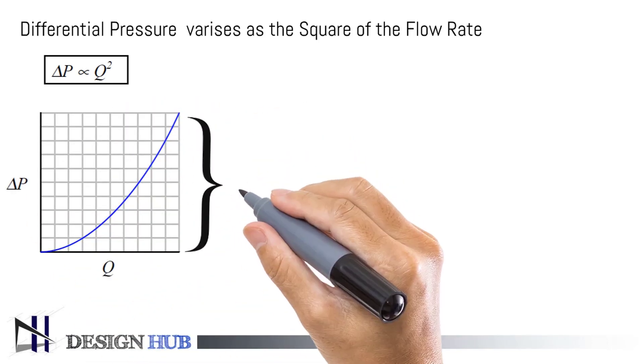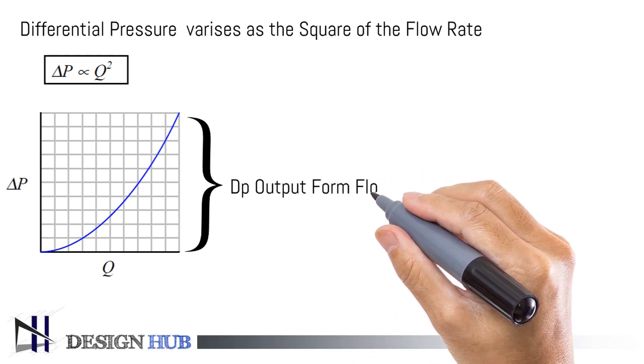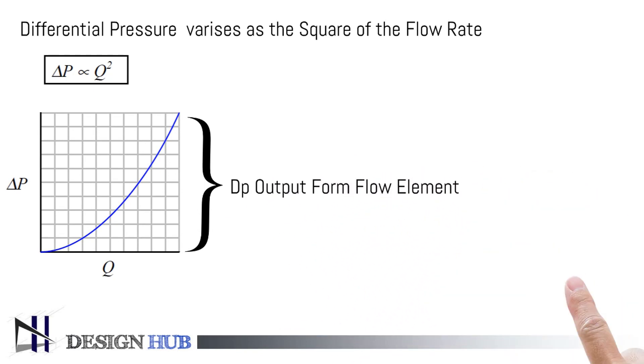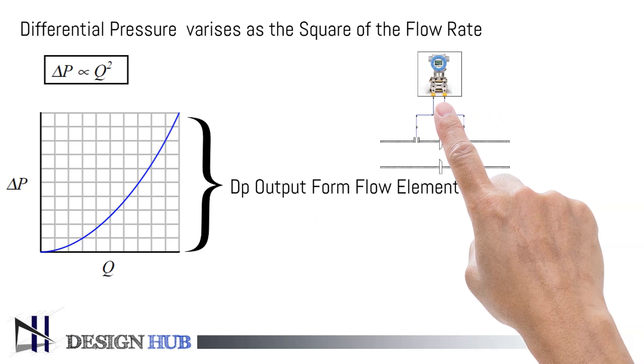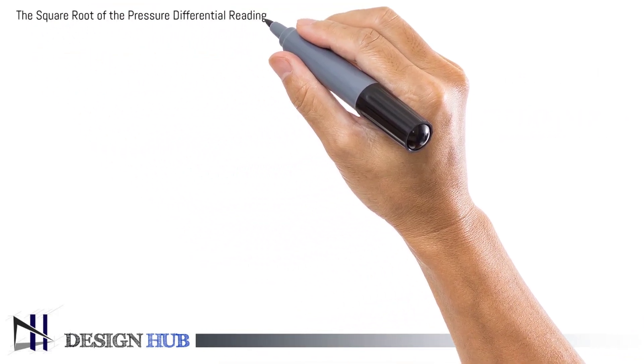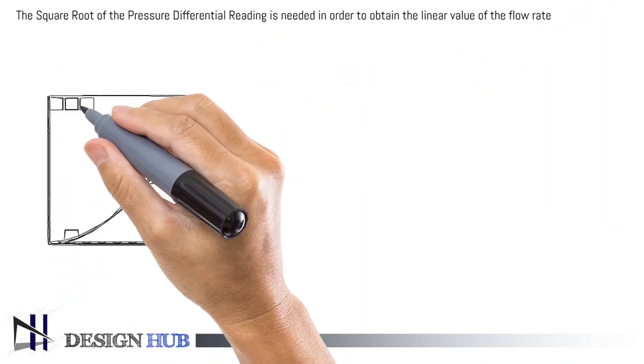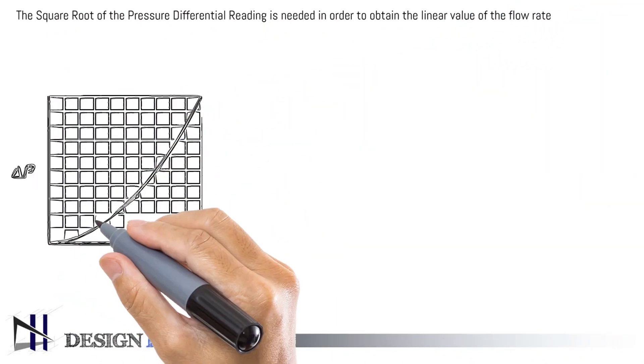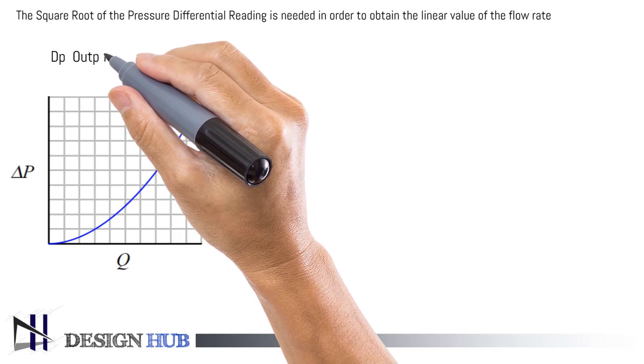This output is directly received from the differential pressure flow element. Then the square root of the pressure differential reading is needed in order to obtain the linear value of the flow rate. This is the DP output from the flow element.